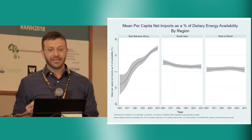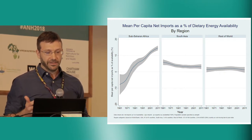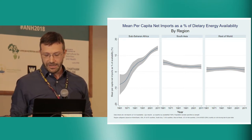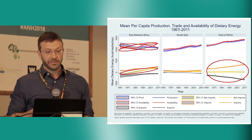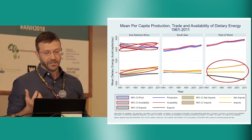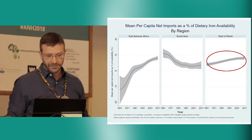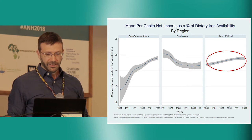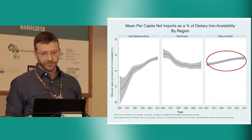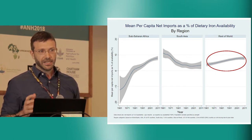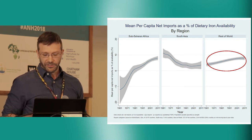Here we're looking at mean per capita net imports of dietary energy as a percentage of total dietary energy availability. Sub-Saharan Africa has continued to be a net importer of dietary energy, much less so observed in South Asia and the rest of the world. A similar figure now looks at dietary iron availability as opposed to dietary energy availability, and we see a slightly different profile: for the rest of the world, we actually see an increase in net imports as a percentage of dietary iron availability, highlighting that through trade of different foods and commodities we see different nutrient profiles traded throughout the world.